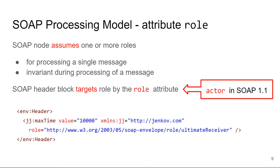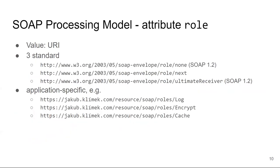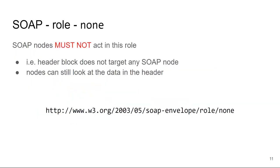One side note — this is SOAP 1.2. If we were to use SOAP 1.1, we would have the actor attribute there instead. The role attribute on the header block is a URI, and SOAP defines three standard ones. There can also be application-specific roles, which are not understood by SOAP itself but whose processing is always application-specific. There are three standard roles defined in SOAP.